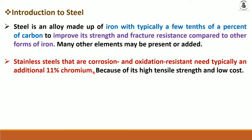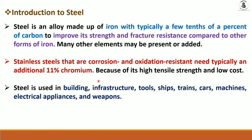Alloy steel also has high tensile strength. Low-cost steel is used in building infrastructure, tools, shapes, trains, cars, machines, electrical appliances, weapons, and many more. Iron is the base metal of steels — for any kind of steel the major constituents are carbon and iron, with up to two percentage carbon with iron making steel material.